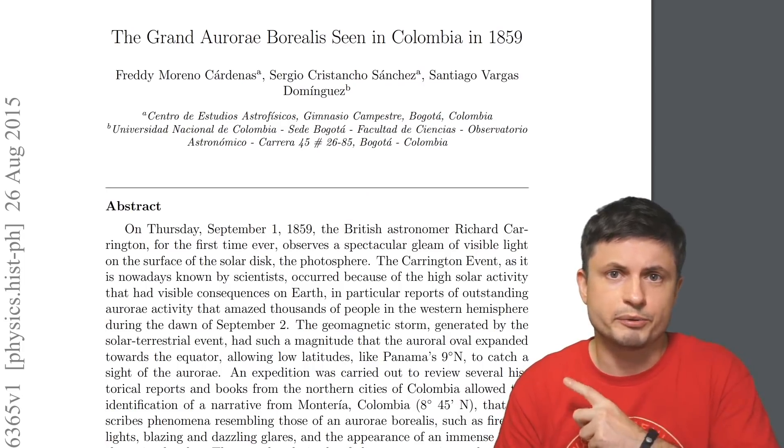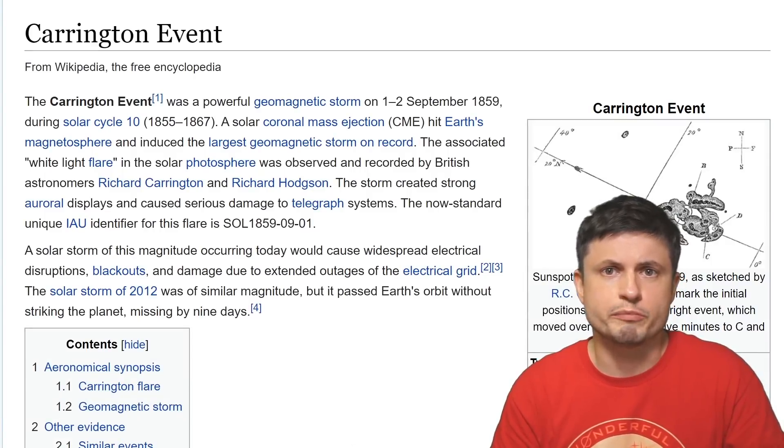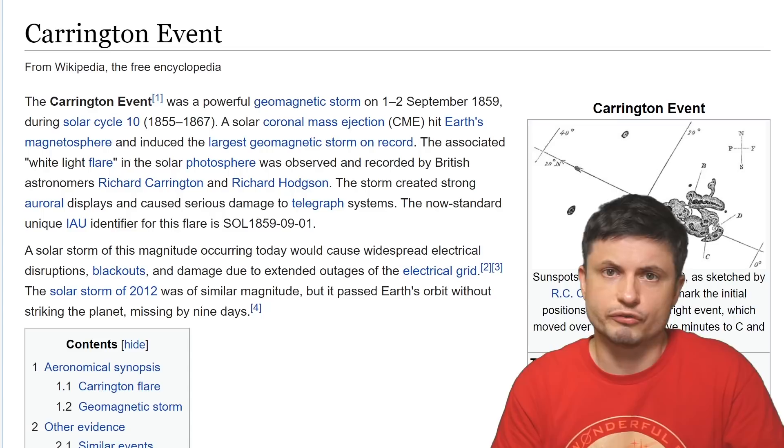And there's at least one paper you can find in the description that goes into more detail in regards to various aurora observed from Colombia back in 1859. But there were obviously some other geomagnetic storms as well. Not as powerful, but powerful enough. There was one in 1921, there was one during the second world war, and more recently there was one in 1989 that caused a severe blackout for several hours in the province of Quebec, essentially knocking out the entire electric grid of the province. But we've discussed a lot of this in one of the previous videos.